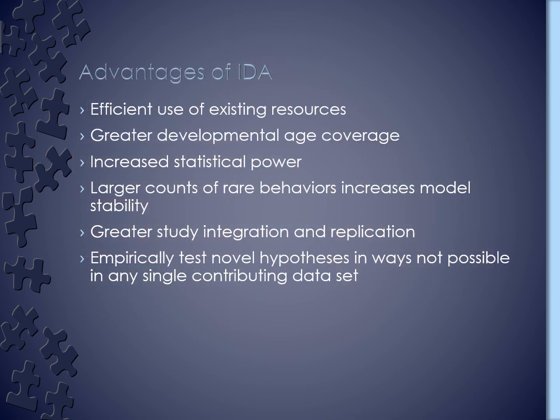What are some of the advantages of integrated data analysis? It is an efficient use of existing resources — how are we going to answer new questions with all of this data that we're collecting and archiving? In some applications, it lets us cover development more broadly. To the extent some studies have overlapping age ranges, we might be able to look at a longer span of development. Because we're looking at larger sample sizes, we'll have increased statistical power. We also have larger counts of rare behavior, which will contribute to model stability. We'll also directly have access to answering questions about study integration and replication, and it allows us to answer novel hypotheses in ways that might not be possible in the single contributing studies.